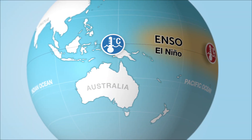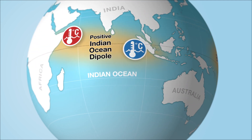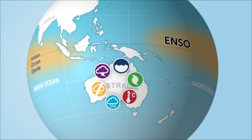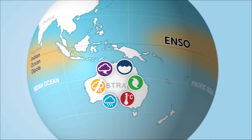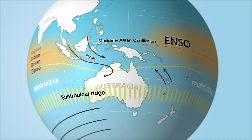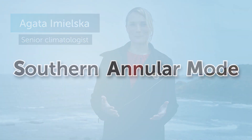While El Niño, La Niña and the Indian Ocean Dipole are the primary drivers of year-to-year climate variability in Australia, there's a set of secondary drivers that can also play a key role. One of these is the SAM, or the Southern Annular Mode.